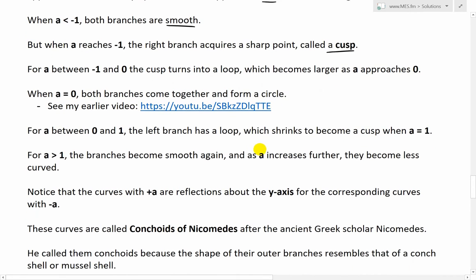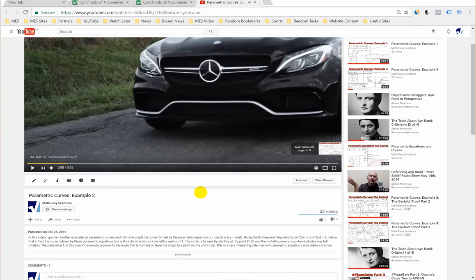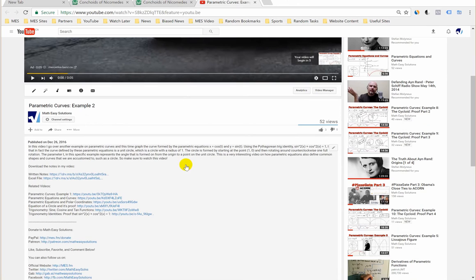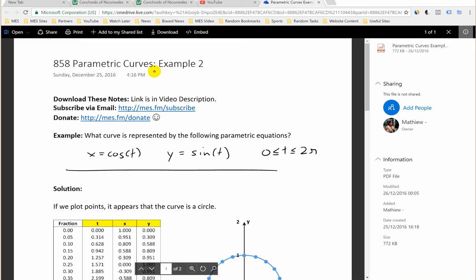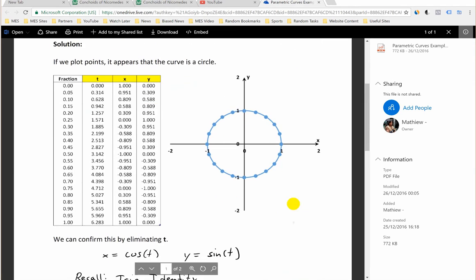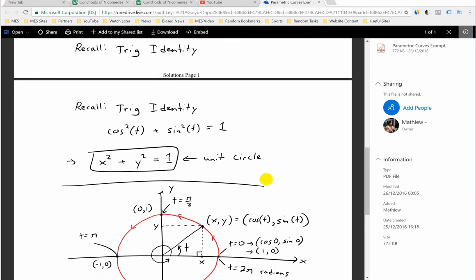And you can also see my earlier video here. So here's my earlier video. I'll just click here to see the notes, the written notes. So here are the notes from my example 2 video. And notice what happens in here when a is equal to 0. We're just left with x equals cosine t, and then the a tan t disappears as well because a is 0. So we have y equals sine t.